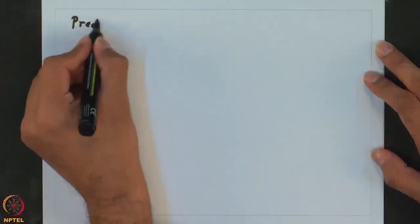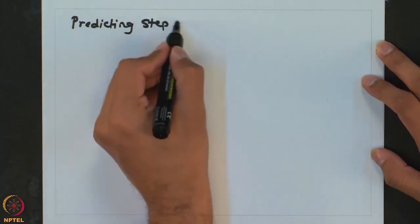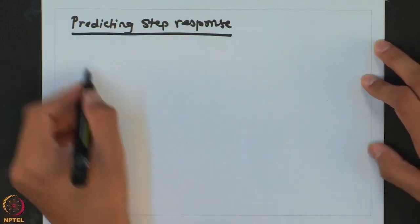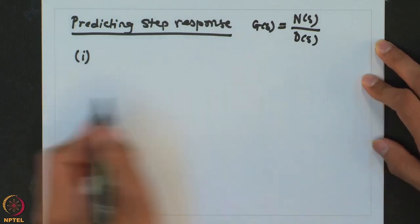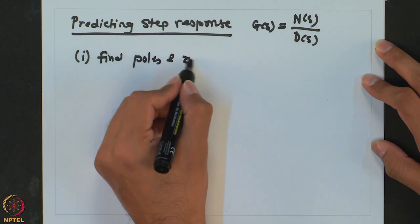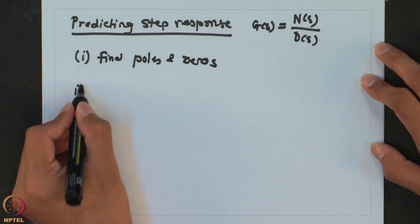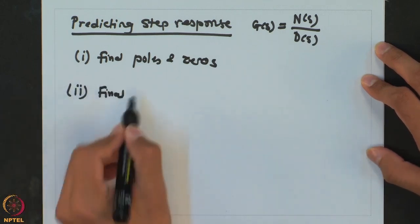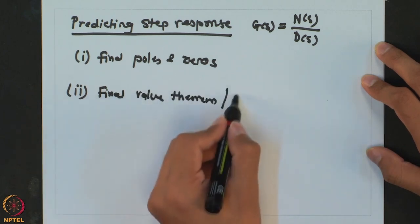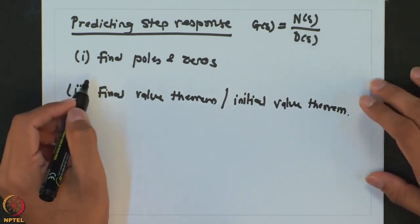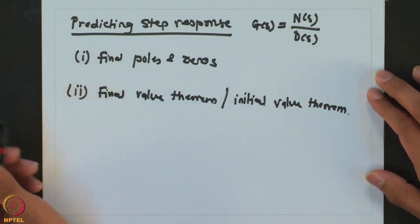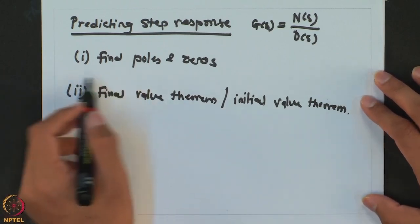Once we have the transfer function, we should be able to predict its step response using these steps. For a transfer function of the form N(S) over D(S), the first step is to find all the poles and zeros. The next step is to use the final value theorem, and in certain cases the initial value theorem as well. With the help of these two, we can predict the step response of any transfer function. To do this, we plot these poles and zeros into the complex plane.